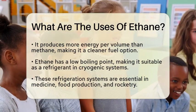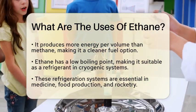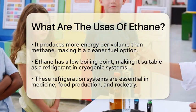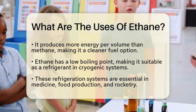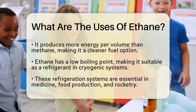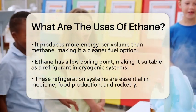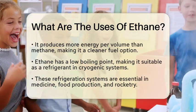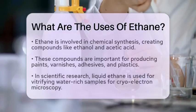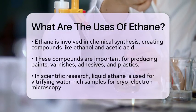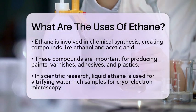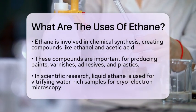Moving on to more advanced applications, ethane is involved in chemical synthesis. It is used to create compounds like ethanol, acetaldehyde, and acetic acid. These substances are important in producing paints, varnishes, adhesives, and various plastics.